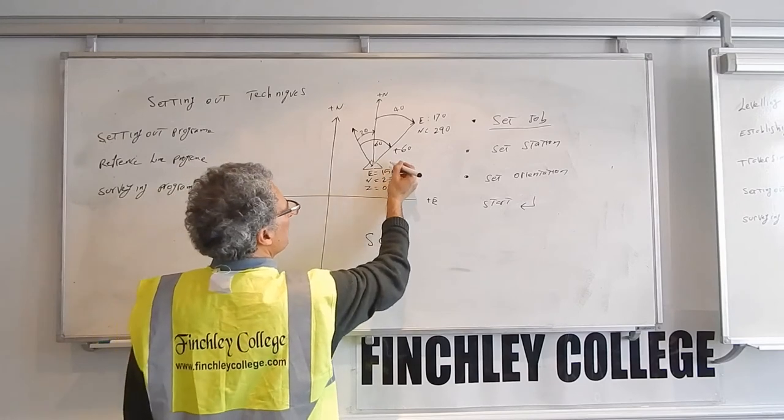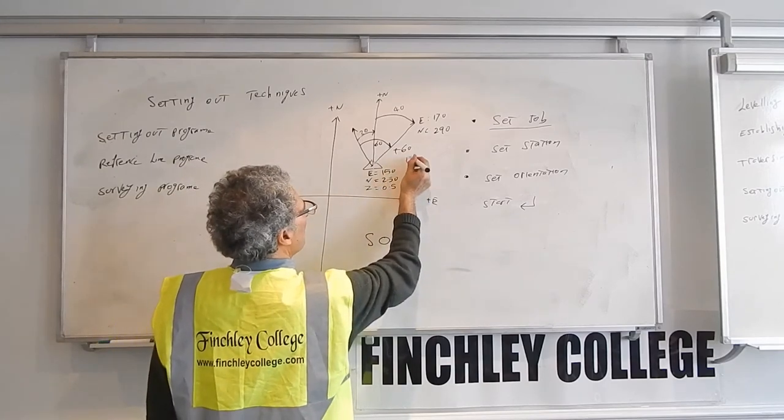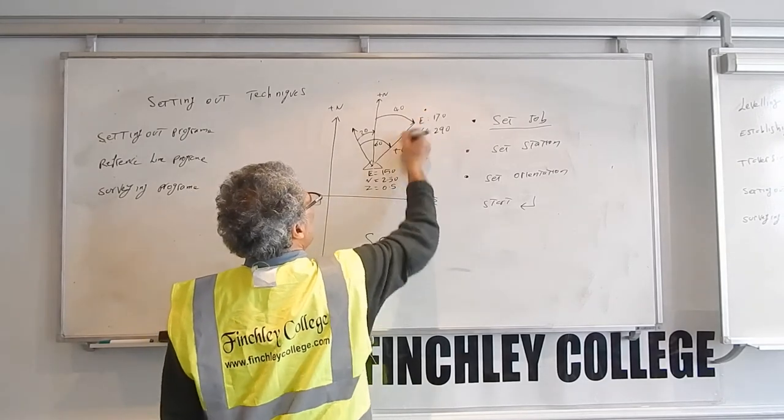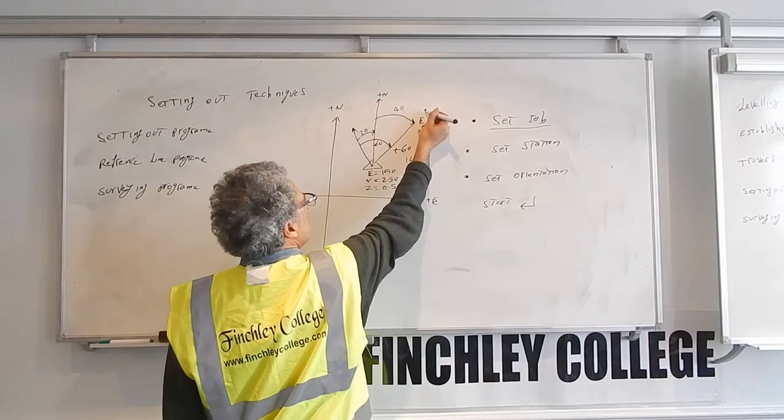And then for the distance, it will show you, for example, the distance 12.9 meters. So then you hold the target here and you measure the distance and if you're over reading...